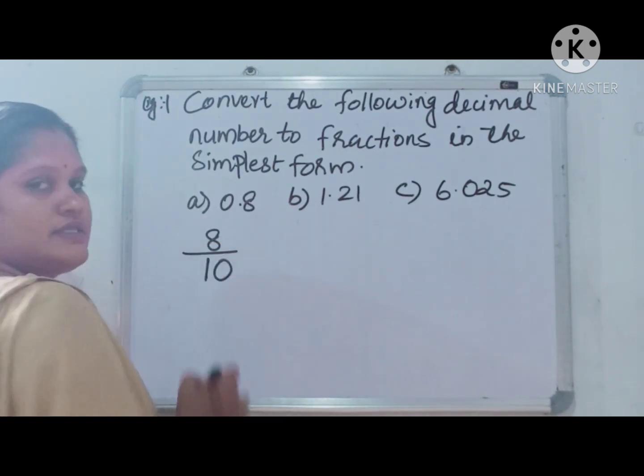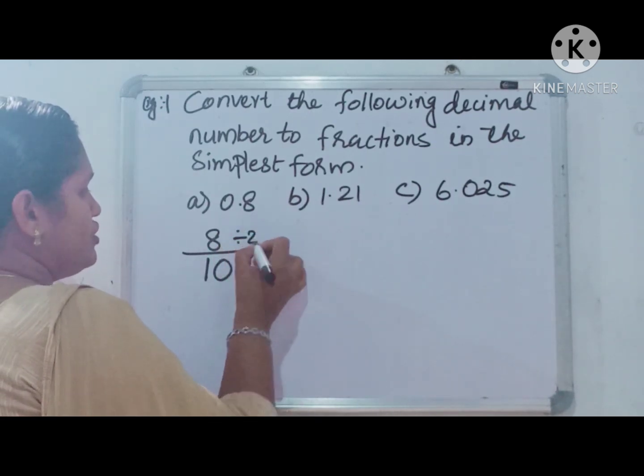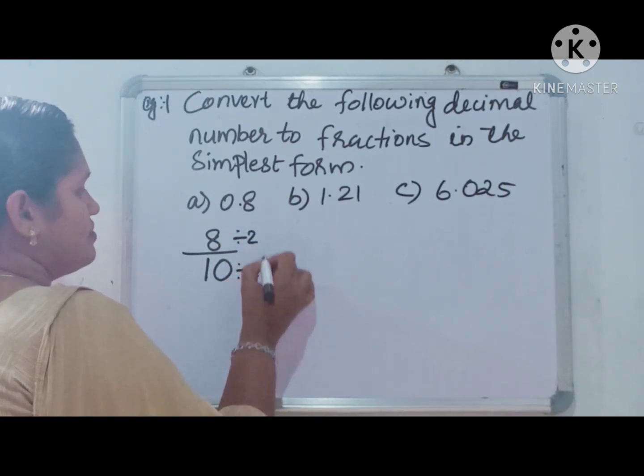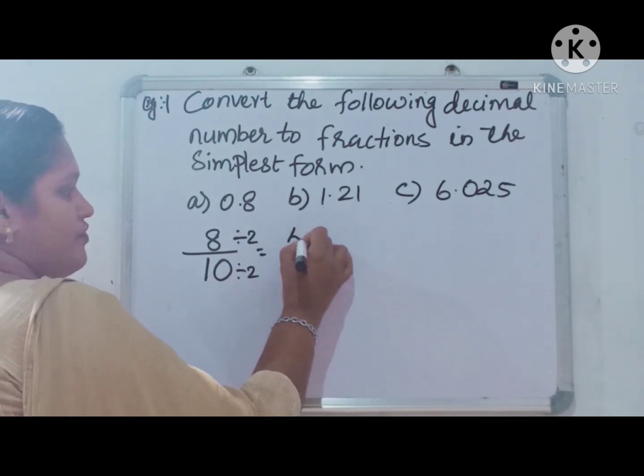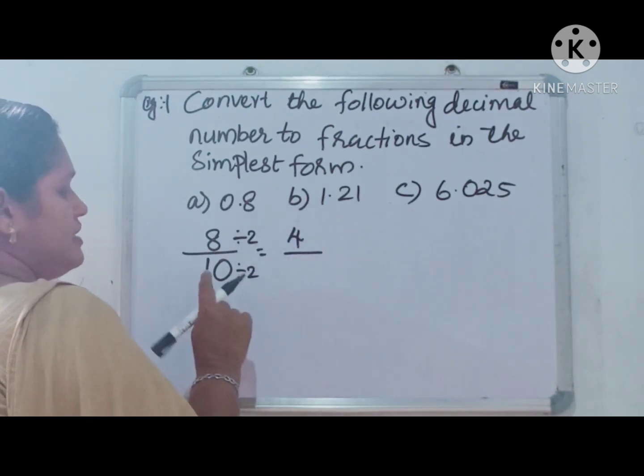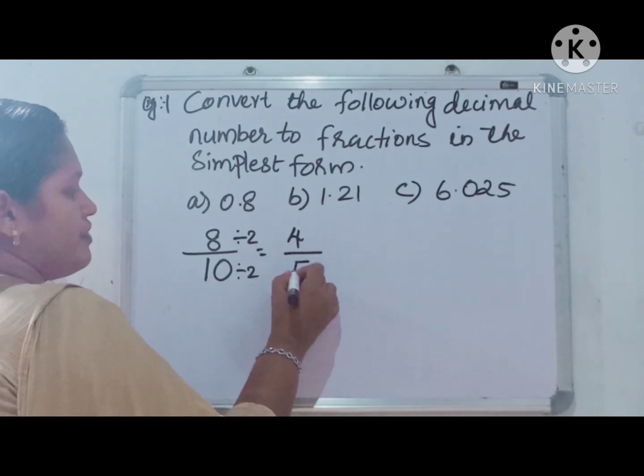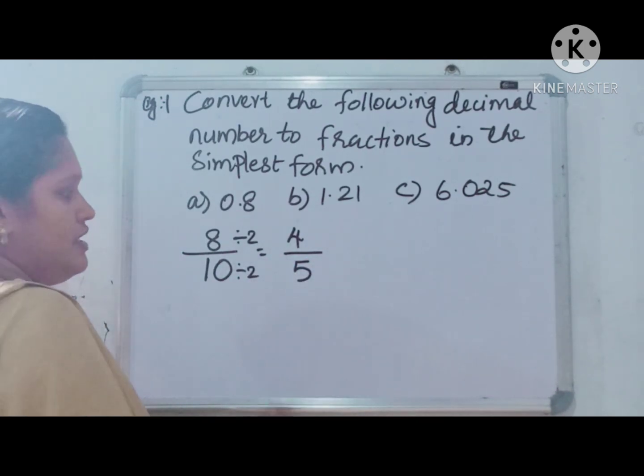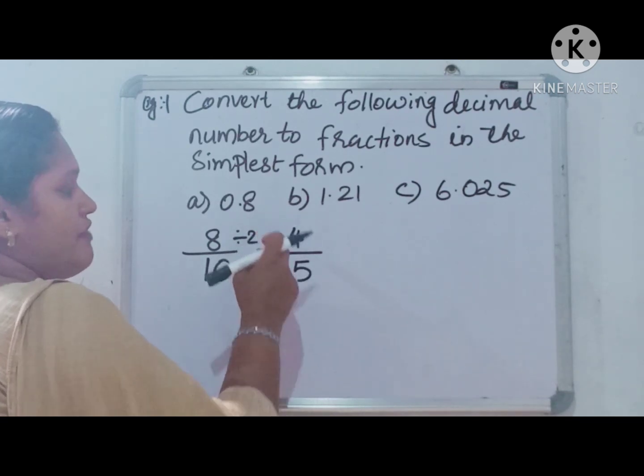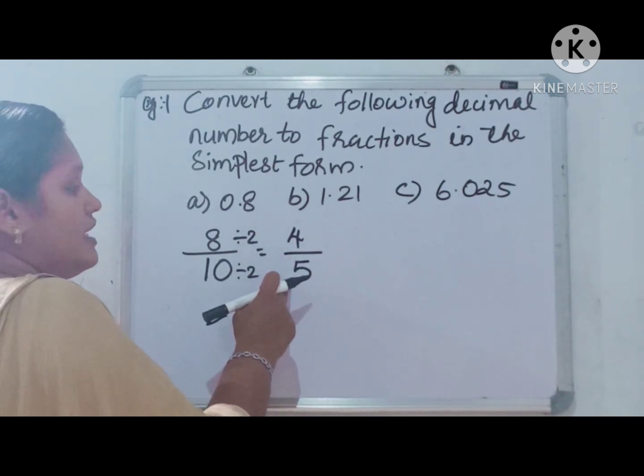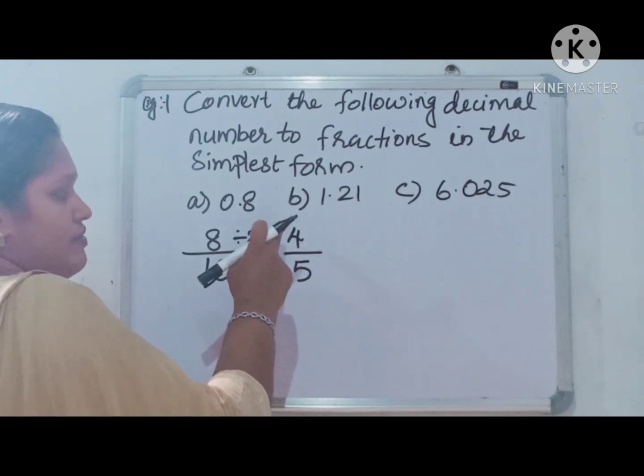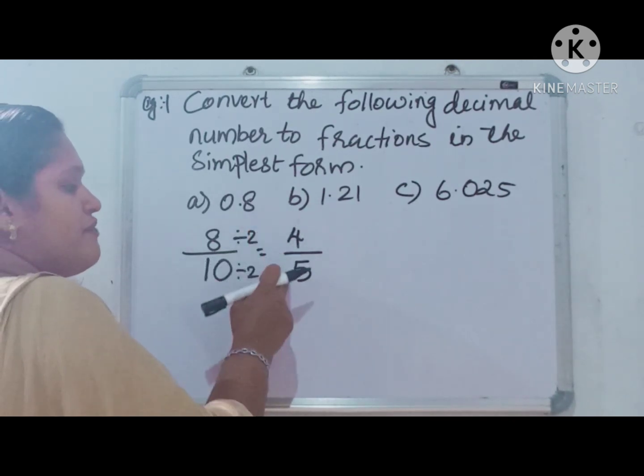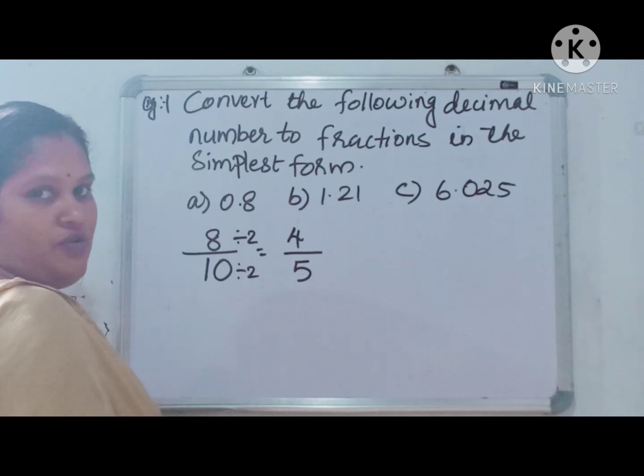Both numbers are even numbers. We can divide both sides by 2. 8 divided by 2 is 4, and 10 divided by 2 is 5. 4 by 5. There is no common factor between 4 and 5, so 4 by 5 is the simplest form.